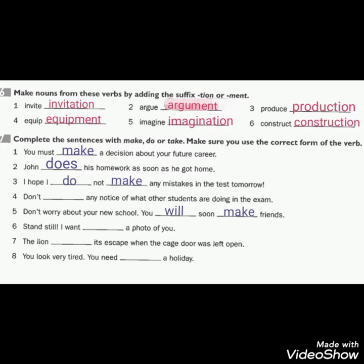Question number 6: Make nouns from these verbs by adding the suffix -tion or -ment. Number 1: Invite → Invitation. Number 2: Argue → Argument. Number 3: Produce → Production. Number 4: Equip → Equipment. Number 5: Imagine → Imagination. Number 6: Construct → Construction.